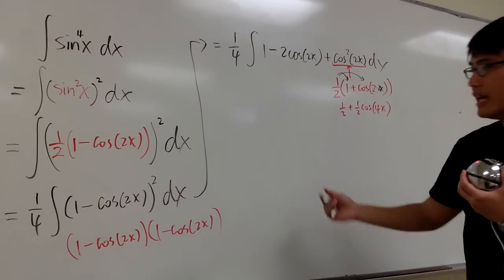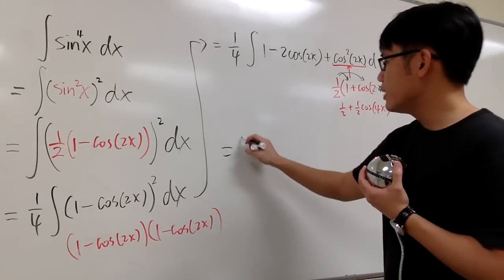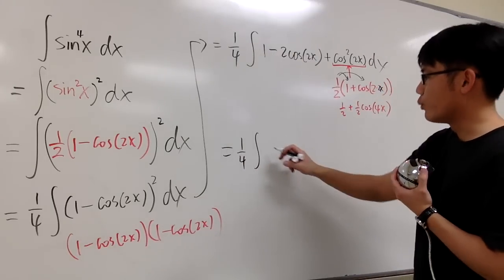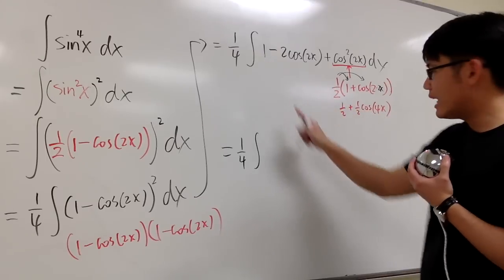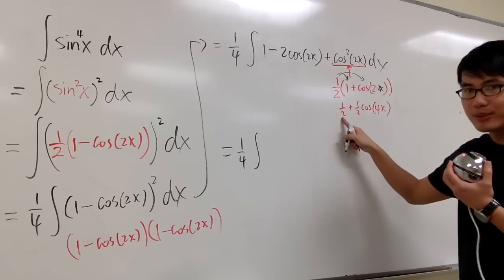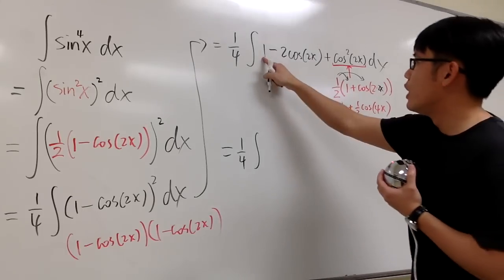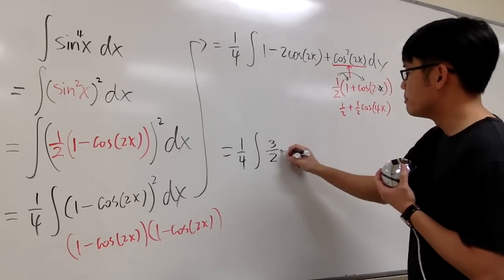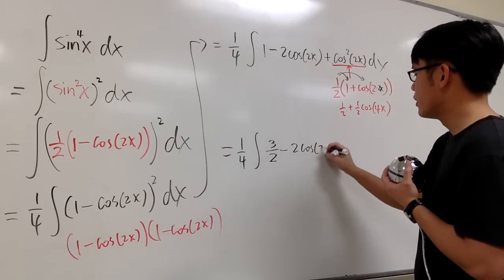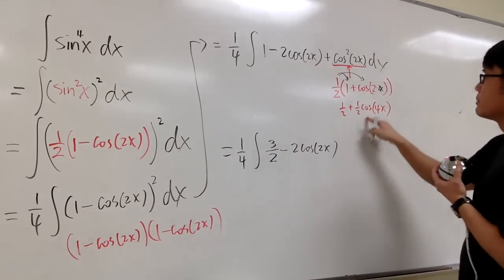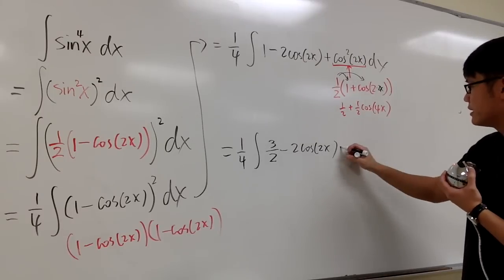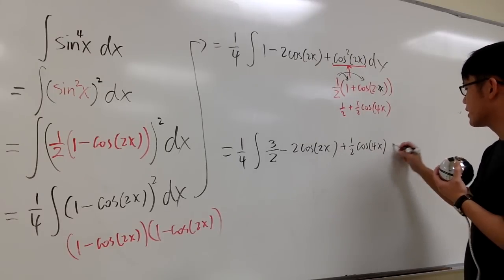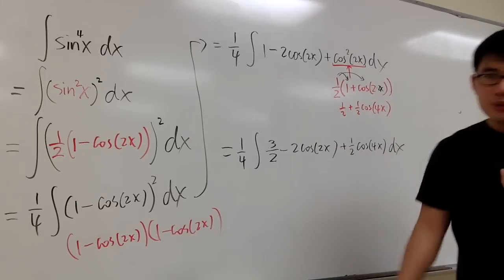Now we look at the full integral, which is 1 over 4 times the integral. We have the 1 right here, but then we have another one-half here — they are numbers, so combine the terms: 1 plus one-half is three-halves. So we have three-halves, minus 2 cosine of 2x, plus one-half cosine of 4x. We are finally ready to integrate.